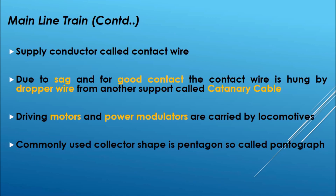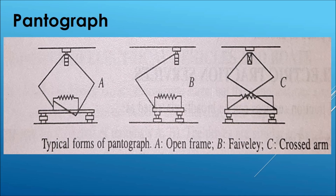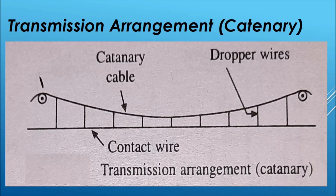The dropper wires hold the contact wire straight. The common structure of the pantograph is pentagonal — that is why it is called a pantograph. There are three types of pantographs: the first is the open frame type, the second is the fable type, and the third is the cross arm type.